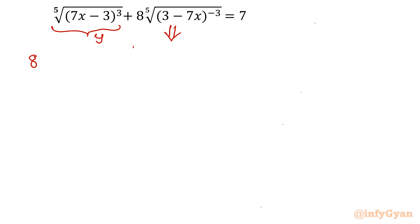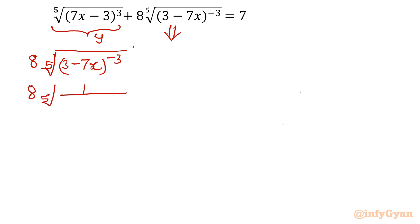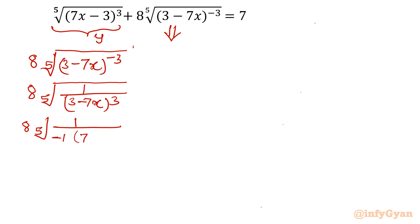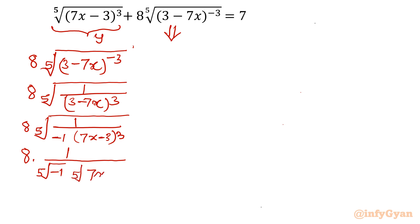We will write 8 times the 5th root of (3 minus 7x) to the power minus 3. First, I rewrite it as 8 times the 5th root of 1 over (3 minus 7x) cubed, to make the power positive. Then I take minus common from the denominator, so it becomes minus 1 times (7x minus 3) cubed in the denominator. In the next step I separate the factors: 5th root of minus 1 times the 5th root of (7x minus 3) cubed. Now you can see the second factor is y.